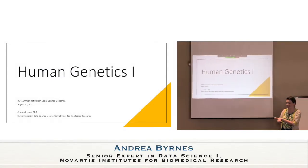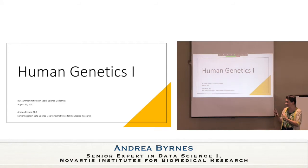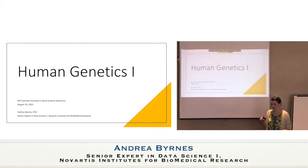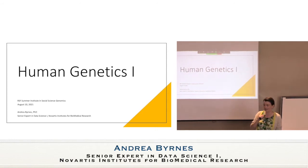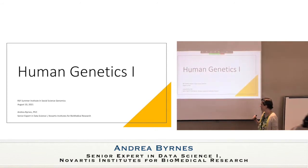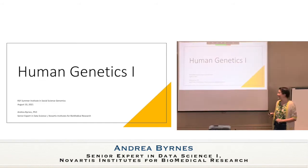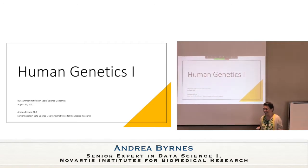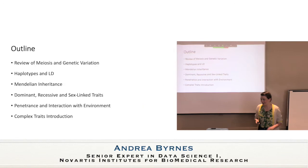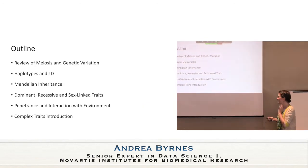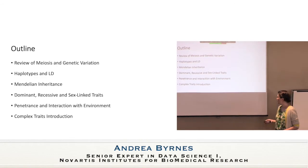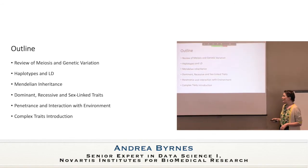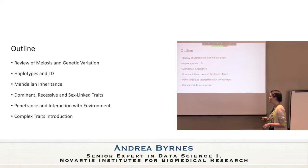Welcome back. This is the second of four talks, and the last one for today. Based on a question from the last session about how unique genetics is to humans, I realized that even though I've entitled this talk 'Human Genetics 1,' there are very few human examples. We're going to quickly review meiosis and genetic variation, then get into haplotypes and LD with basic intuitive definitions, and then start talking about Mendelian inheritance.